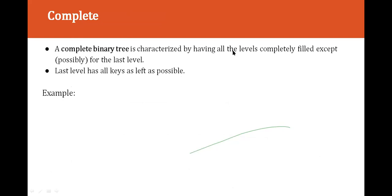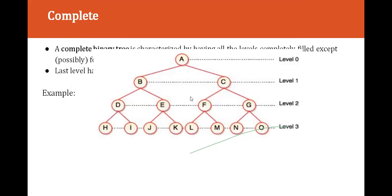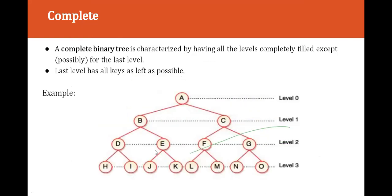A complete binary tree is characterized by having all levels completely filled except possibly the last level, where all nodes are as far left as possible. For example: A is the root at level 0; B and C at level 1; D, E, F, G at level 2; and H, I, J, K, L, M, N, O at level 3.